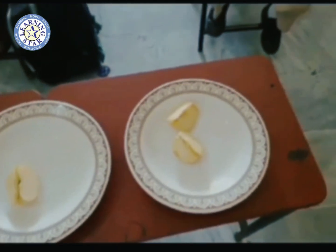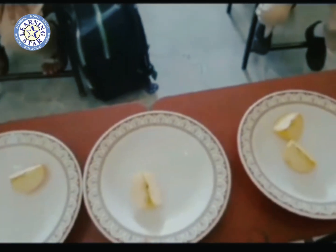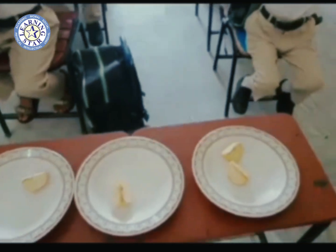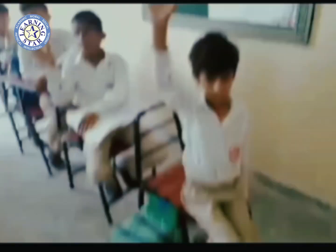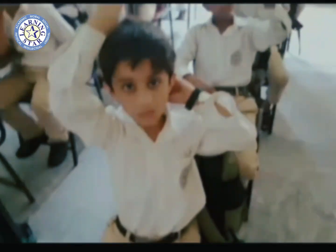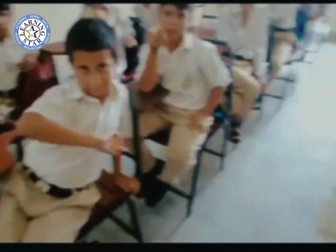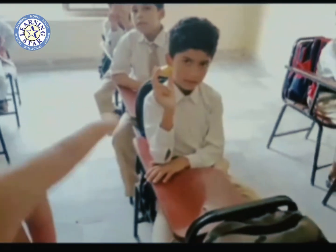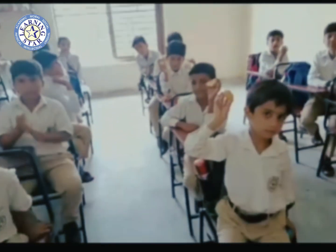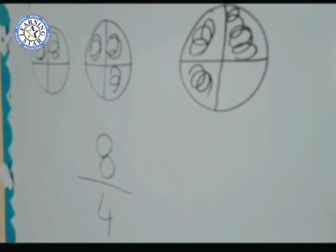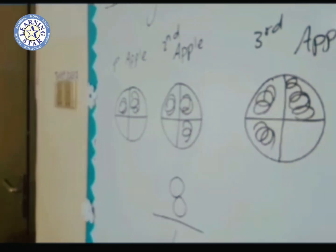Three apples — the first apple has 4 pieces, the second apple has 3 pieces distributed, and the third apple also has pieces distributed. Okay students, let's count how many pieces we have distributed in total: one, two, three, four, five, six, seven — how many pieces have we distributed? Seven and eight, well done!